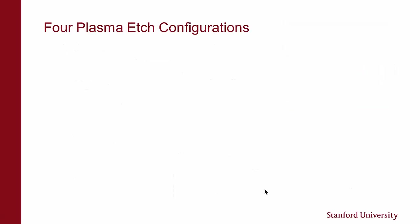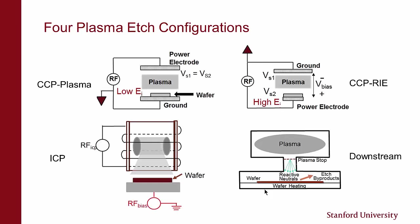I want to give you an overview of the four plasma configurations I'll be going into in more detail. First, I have what we call a CCP plasma — capacitive coupled plasma. I'll talk about the plasma mode with equal electrodes, RIE mode where one electrode is much smaller than the other, then ICP — inductively coupled plasmas — and finally downstream plasmas. Let's start talking about the CCP case.